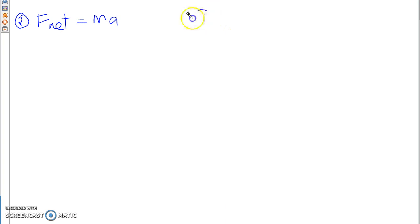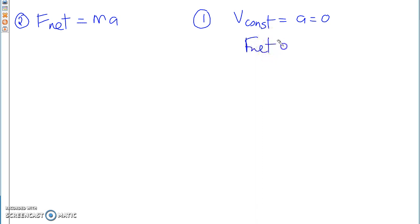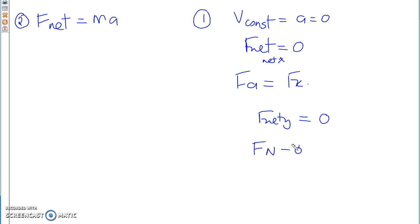And Newton's first law — object in inertia. So velocity constant, which means acceleration equals zero, which means F net equals zero, which means your forces are equal to each other. Whether it's in the net X direction or F net Y. F net Y is also zero, which means FN minus FG equals zero, which means FN equals FG.